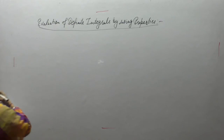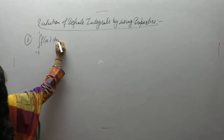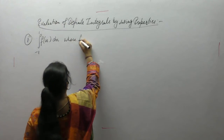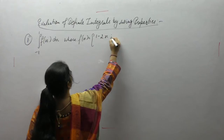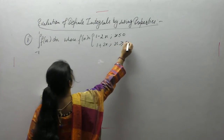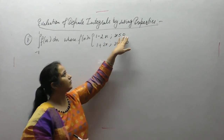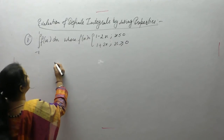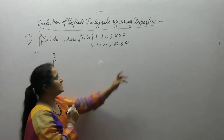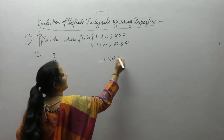Question one: find the integral from minus 1 to 1 of f(x) dx, where f(x) is defined as 1 minus 2x when x is less than or equal to 0, and 1 plus 2x when x is greater than or equal to 0. We have limits minus 1 to 1, and since the function changes definition at x = 0, and 0 lies between minus 1 and 1, we will use the additive property.